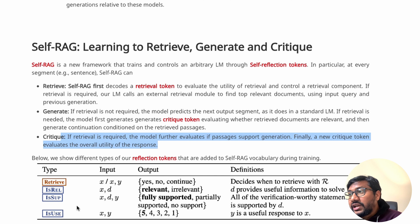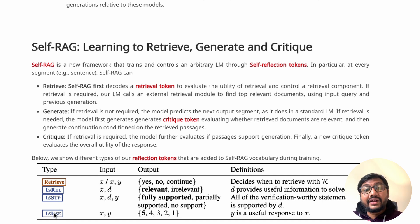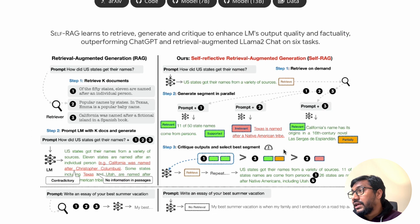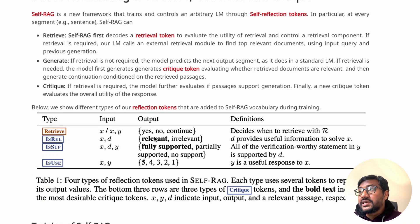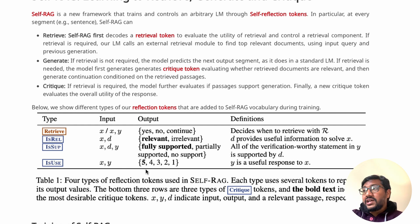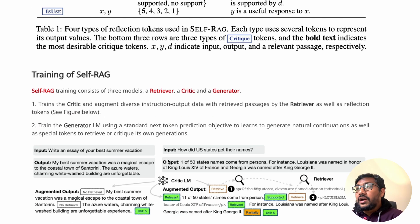Looking at the reflection tokens table: there is a retrieval token, and then the critique tokens. The critique tokens cover: relevant/irrelevant, fully supported/partially supported/not supported, and a usefulness score from 1 to 5. Relevant is best, fully supported is best, and a score of 5 is best. This gives you the ability to control what comes out during inference by adjusting these thresholds.